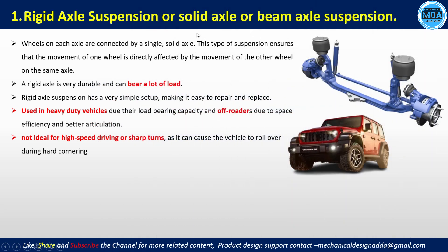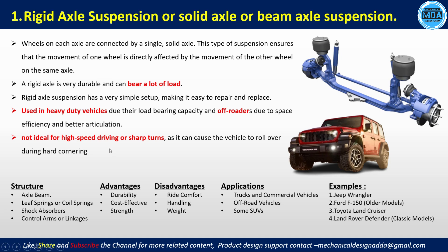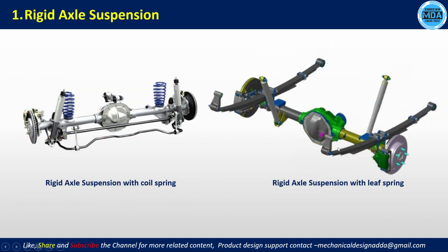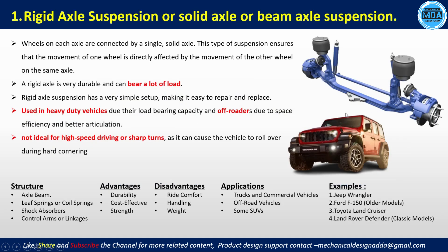Rigid axle suspension, also called solid axle or beam axle suspension, is used in heavy-duty and off-road vehicles because it withstands maximum load. It is not ideal for high-speed driving or sharp turns, as it can cause the vehicle to roll during hard cornering. Components include a complete axle beam, leaf spring or coil spring, shock absorber, and control arms. It is cost-effective and durable. Examples include the Jeep Wrangler, Ford F-150 old model, Land Cruiser, and Land Rover Defender.